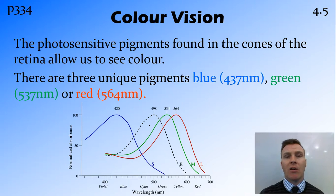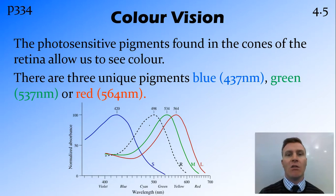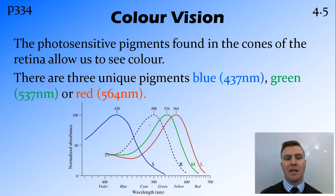Depending on how much this photosensitive pigment has been stimulated, or how much this cone has been stimulated, we then use a blending technique of these three colours to get all the colours that are in between these three colours. And we can then see thousands of different colours.